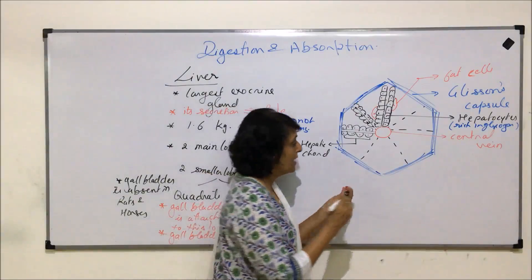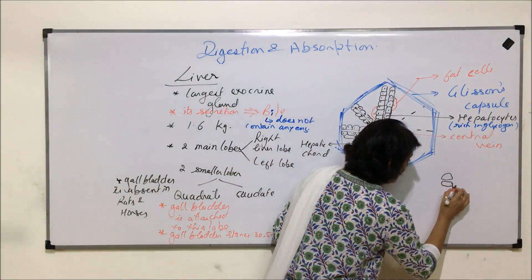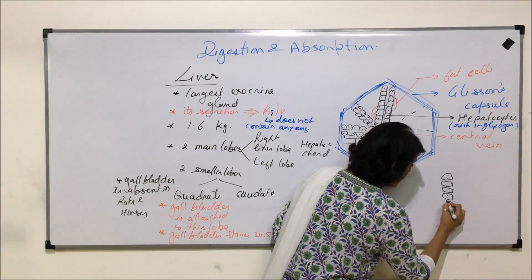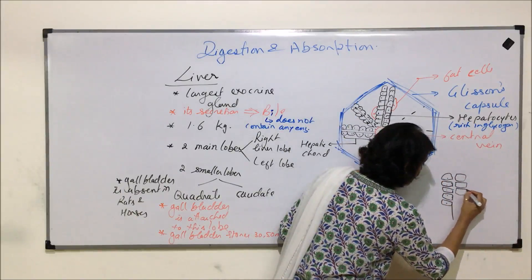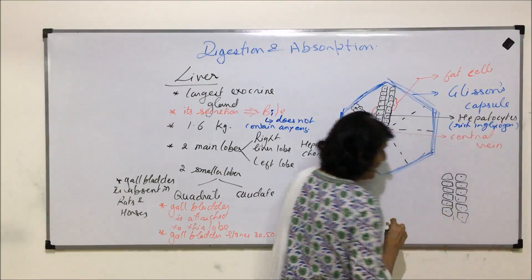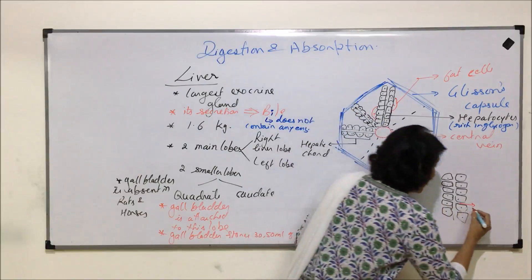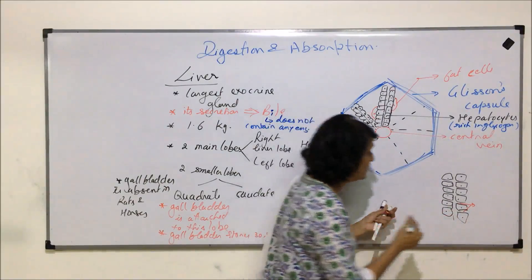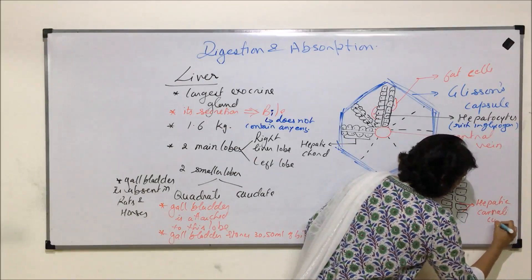To understand the structure better, let's look at an enlarged view. In the enlarged plate we can see that hepatocytes have spaces in between them. These small spaces between the cells are known as canaliculi — specifically hepatic canaliculi.